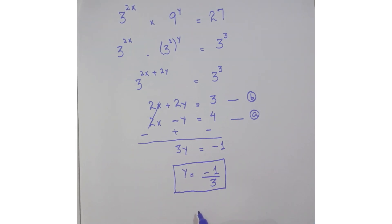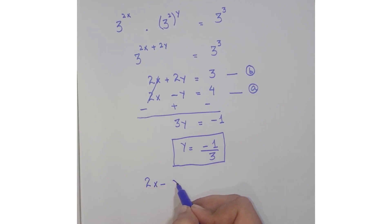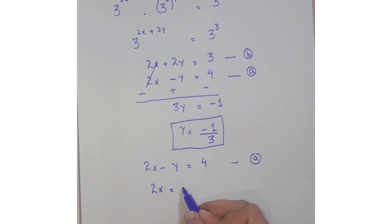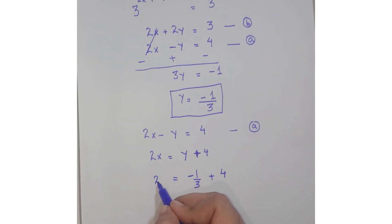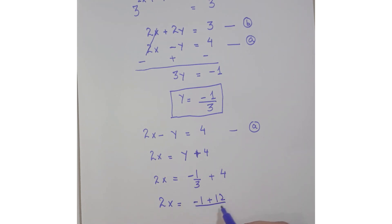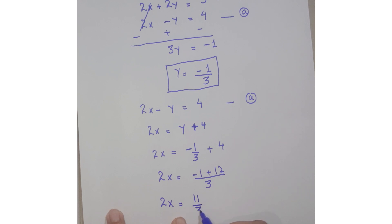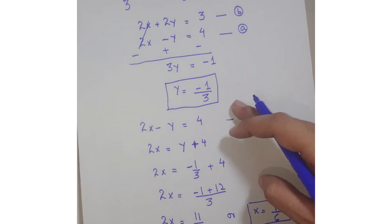Now substitute the value of y into equation A: 2x minus y equals 4, so 2x equals y plus 4. Putting y equals minus 1 upon 3 gives 2x equals minus 1 upon 3 plus 4. Taking the LCM gives minus 1 plus 12 over 3, so 2x equals 11 upon 3, and therefore x equals 11 upon 6. The values of x and y have been evaluated.